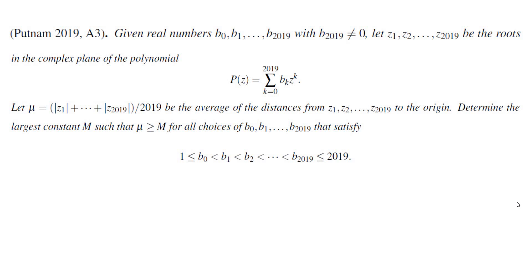In this video we're going to go over problem A3 from Putnam 2019. In this problem we are given a polynomial with a relation between the coefficients: B0 through B2019 are all strictly increasing and they're all between 1 and 2019, and we are asked to find the infimum of the average of the absolute values of the roots.